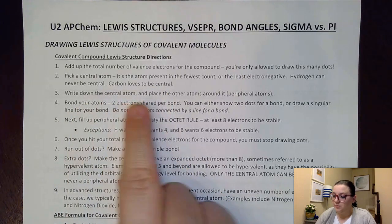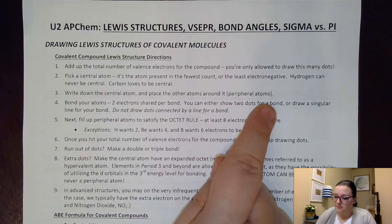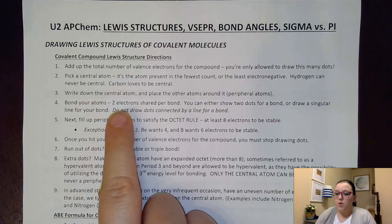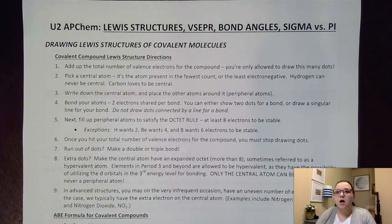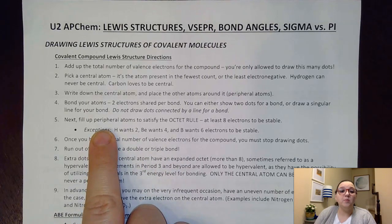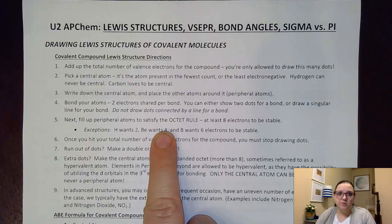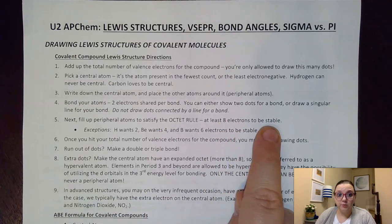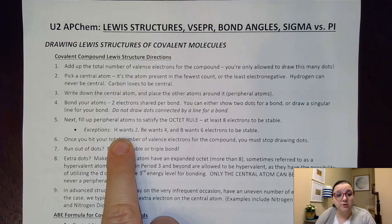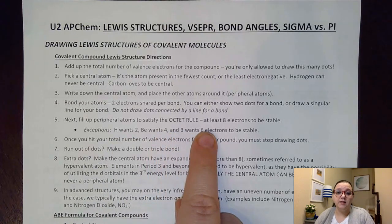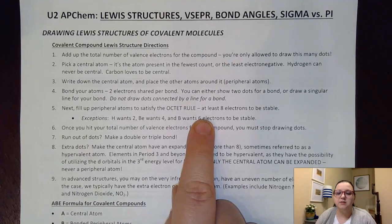Then we put down the central atom and place the other atoms — the peripheral atoms — around it, and we bond them up. You can either use two dots to show the two shared electrons, or use a line. Next, we fill up our peripheral atoms to satisfy the octet rule, but we can only draw as many dots as we tallied in step one. Most things want eight electrons to be stable. However, hydrogen likes only two, beryllium likes four, and boron likes six. We want to make sure we don't oversatisfy those particular elements.